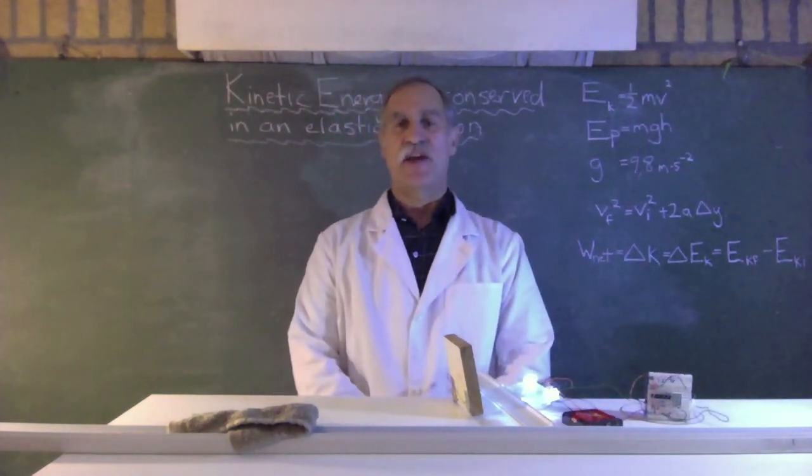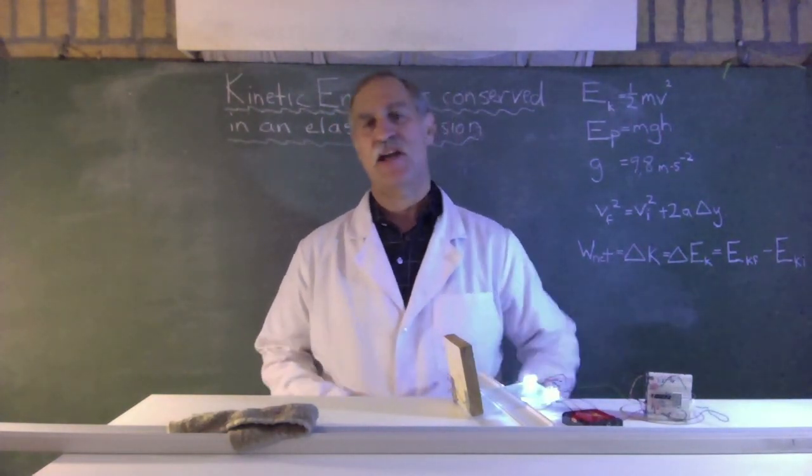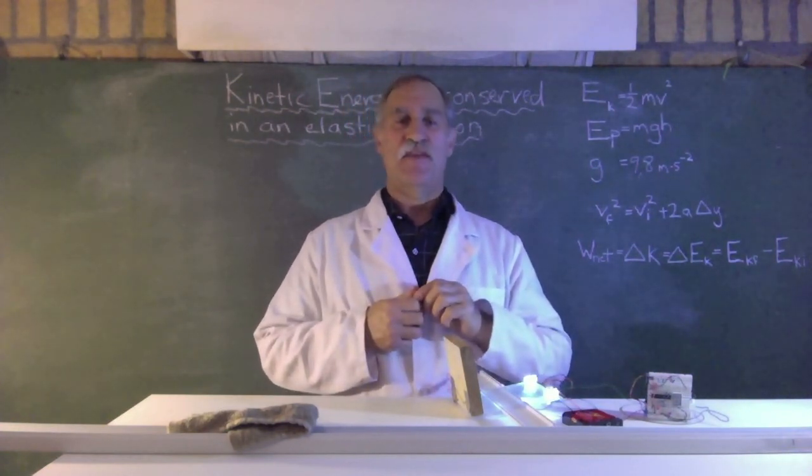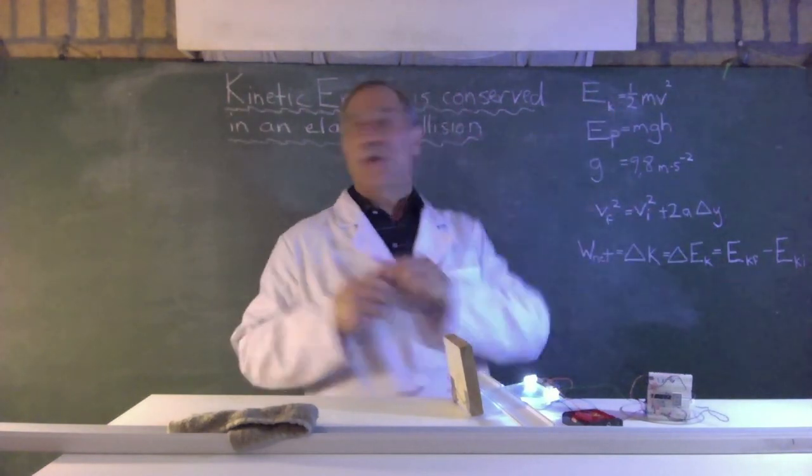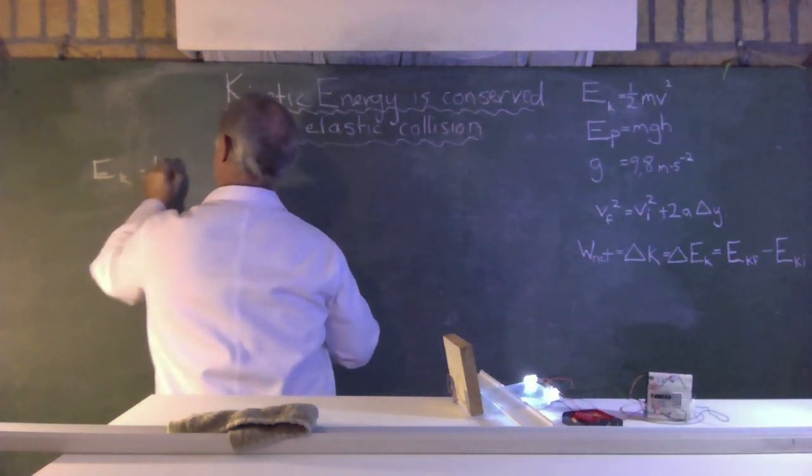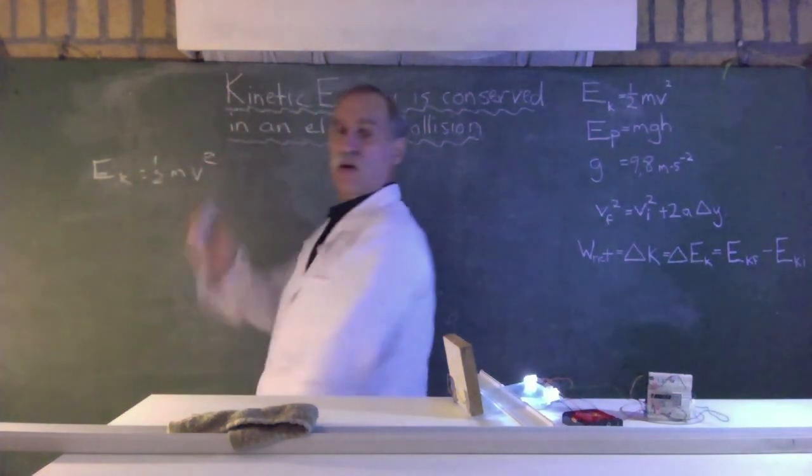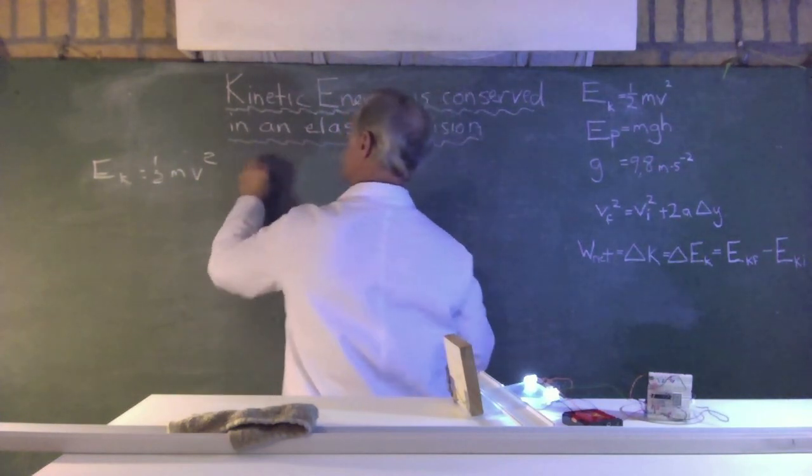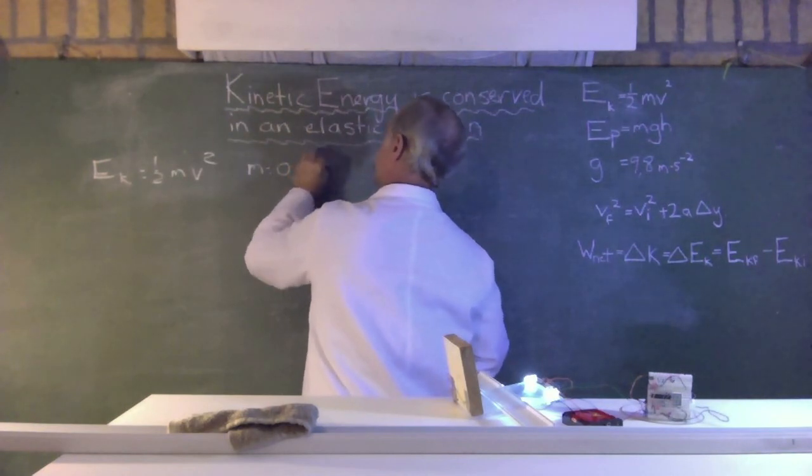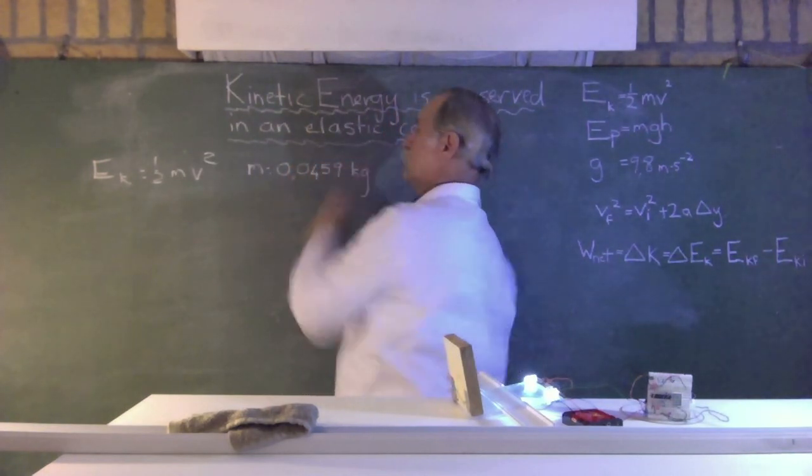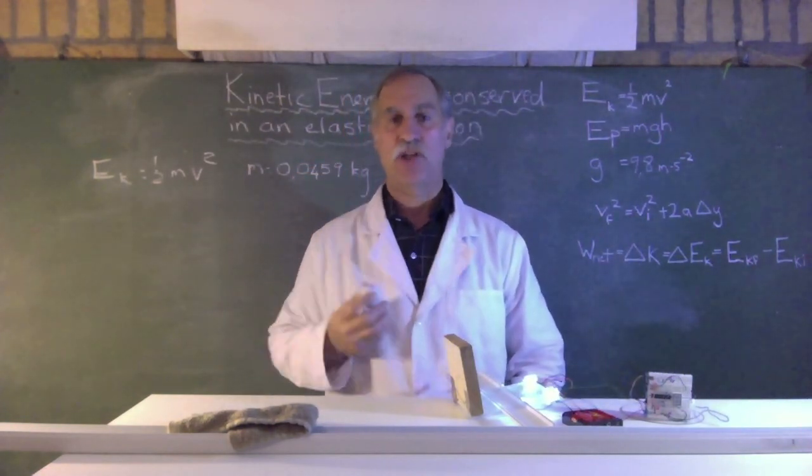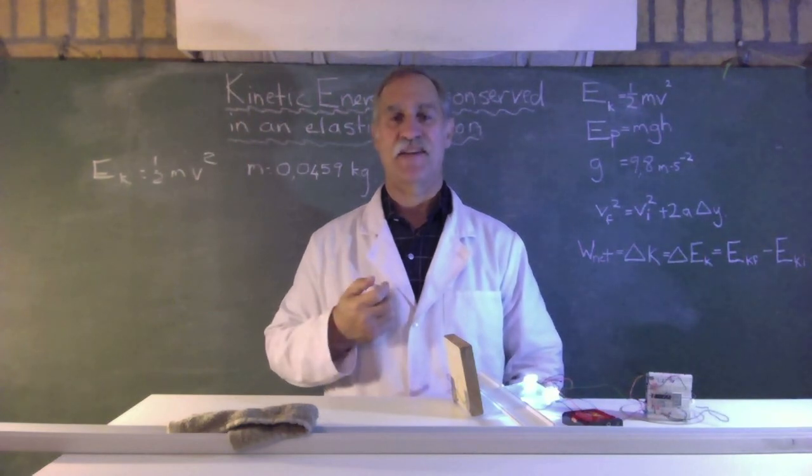I thought it'd be fun to work out the kinetic energy of an object. Let's work out the kinetic energy of a falling golf ball. So what we need first is a formula. And the formula is Ek equals a half mv squared. The mass of a golf ball is 0.0459 kg. If we could figure out the velocity of a golf ball that's falling, then we could work out its kinetic energy.